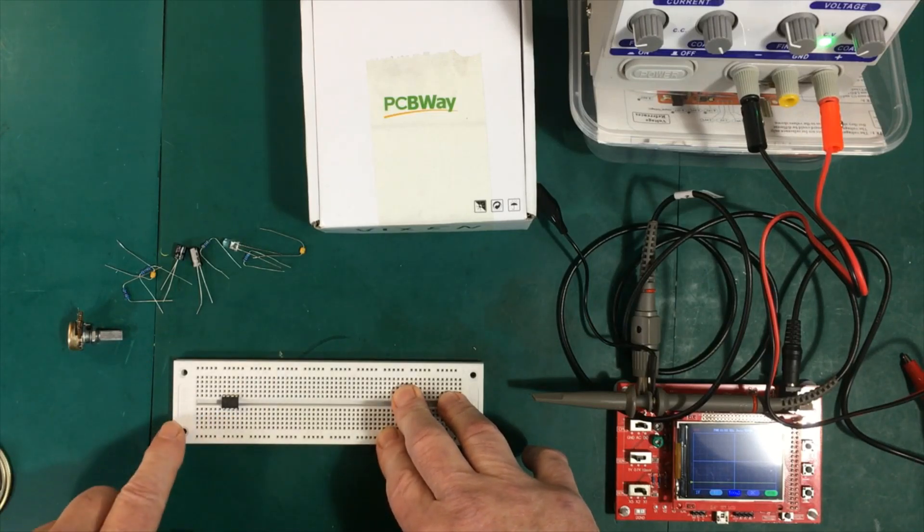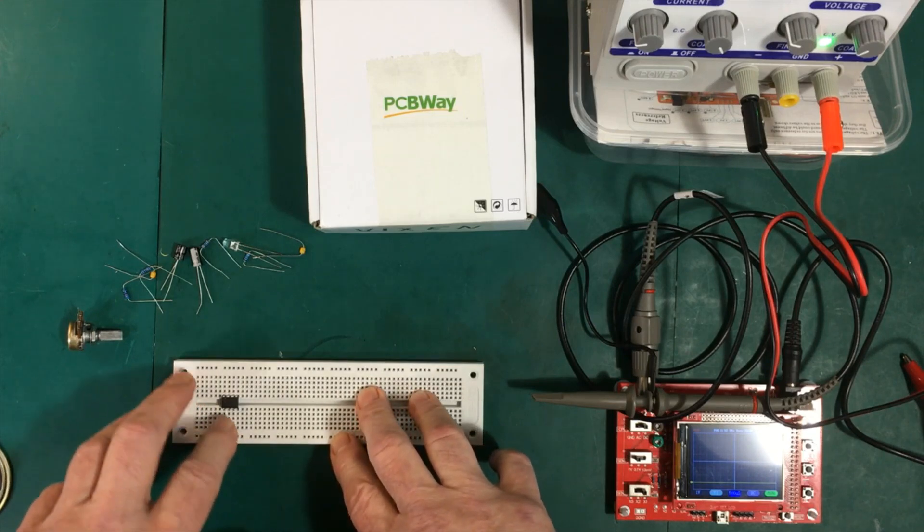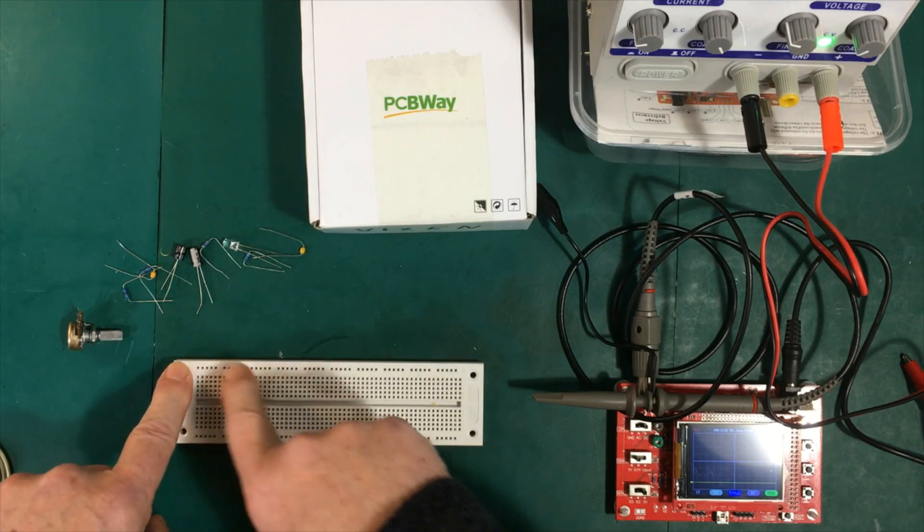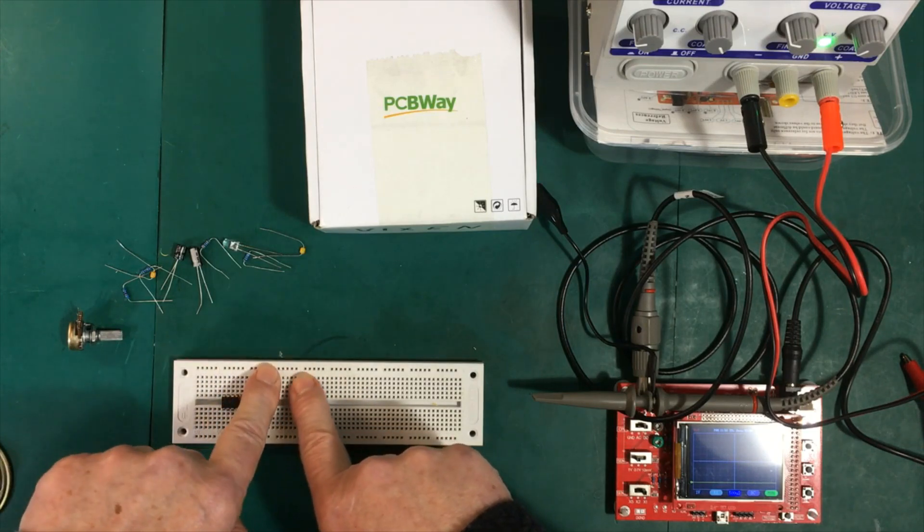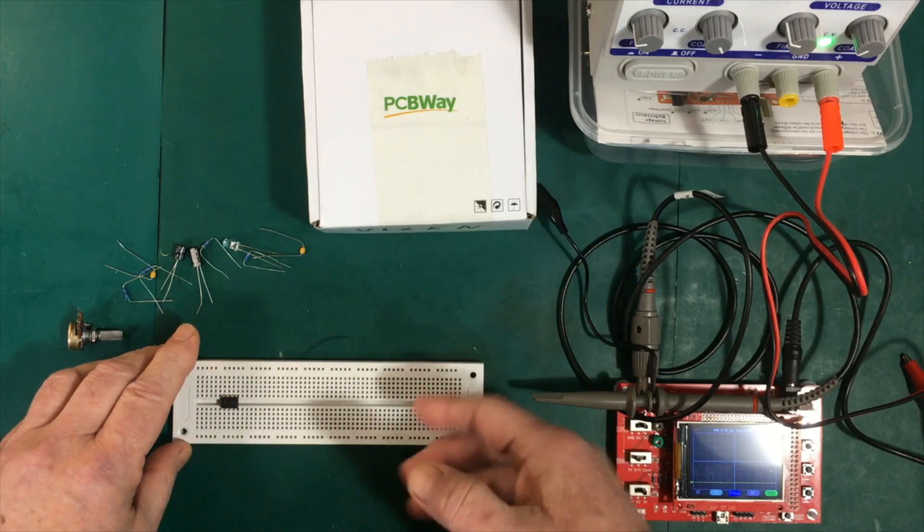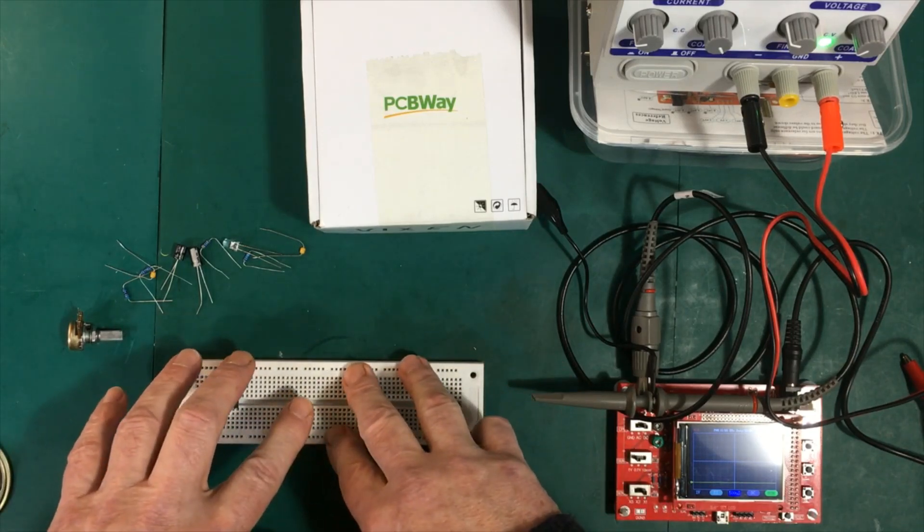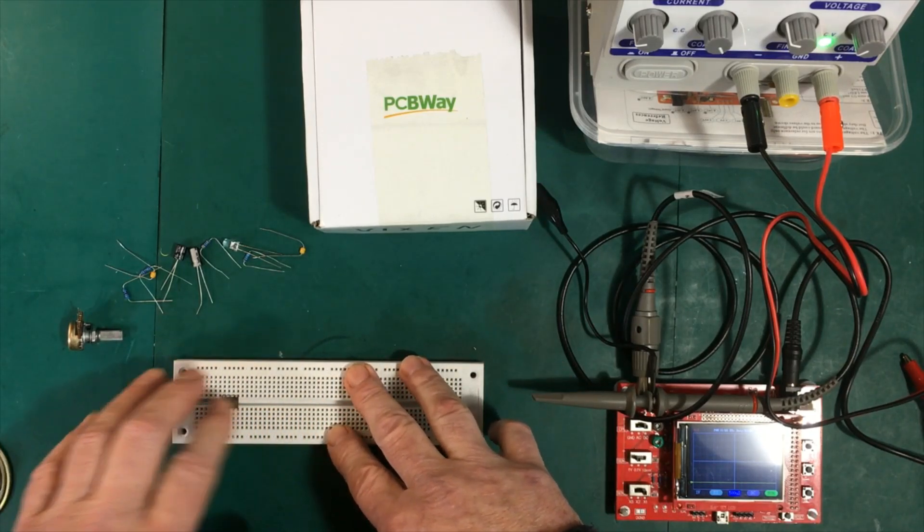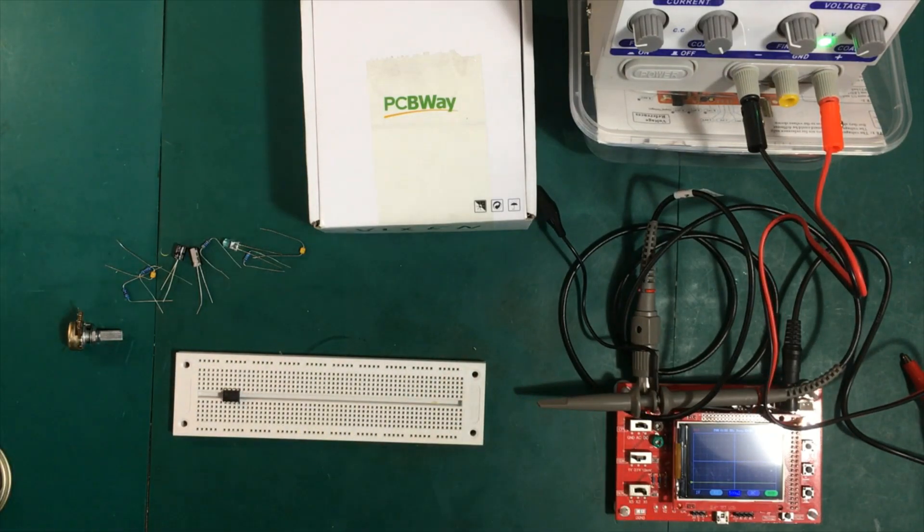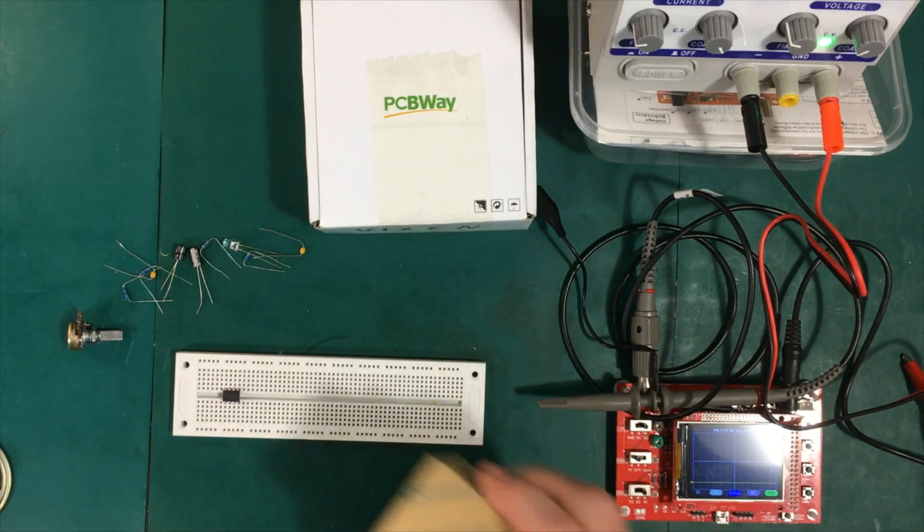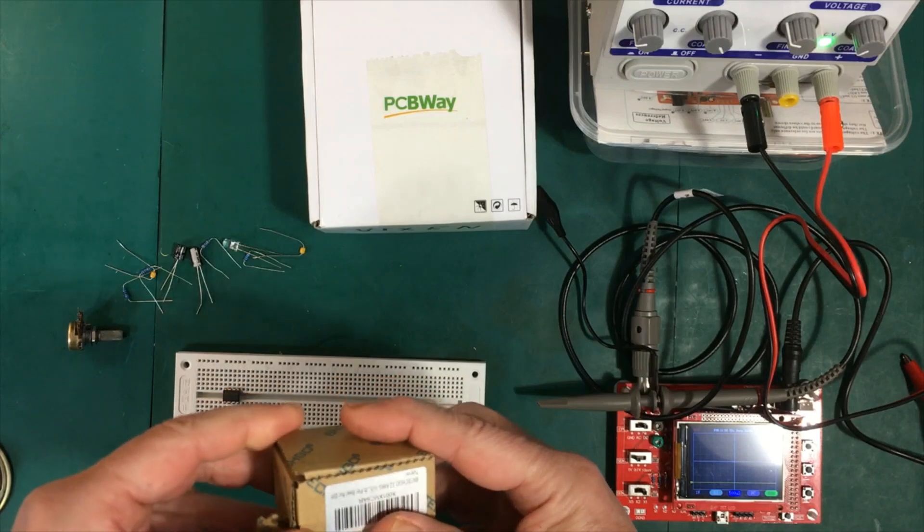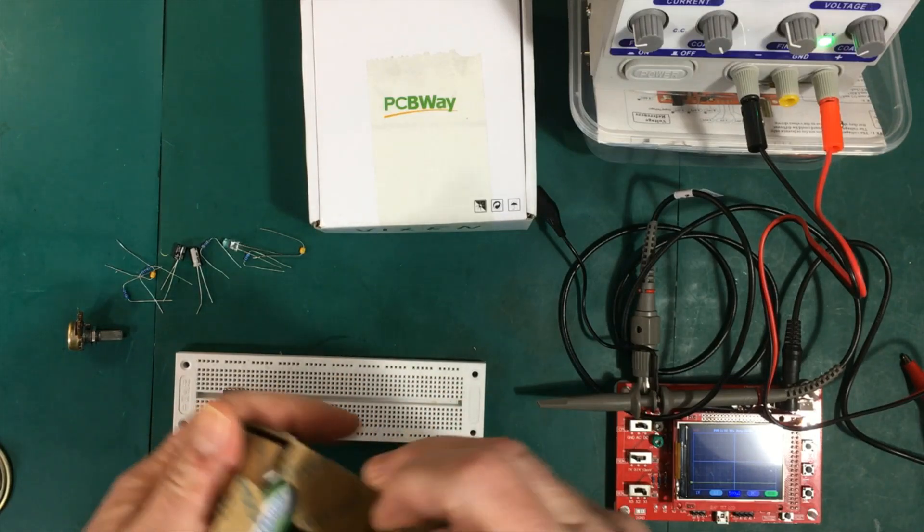Now, one of the first things you should do with these breadboards is connect the power strips together. So what they have on these boards is a first series of three and the next series of three are all separate just in case you wanted different voltages on them. For 99.9% of what we're going to do, we want them all strapped together. So what we're going to do is get some of our wire and create little jumpers to jump between those.